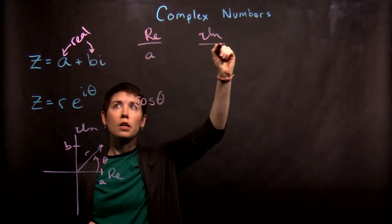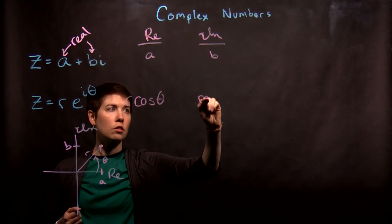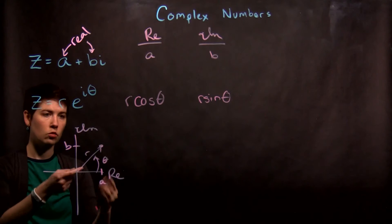If we want the imaginary part, here it's b, nice and easy, but here it's going to be r sine theta, right, this opposite side.